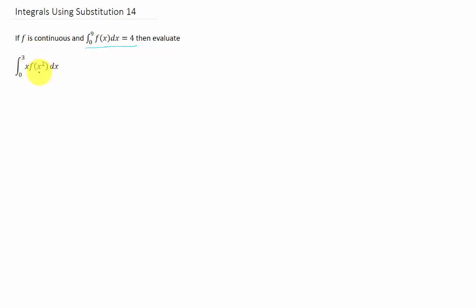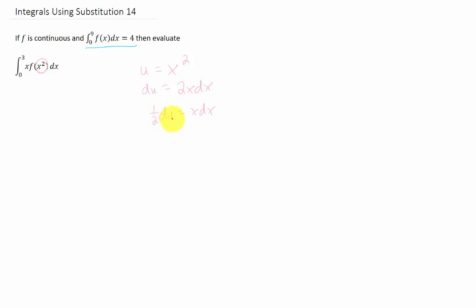There's really no way to find anything out about f of x squared unless we call that x squared some other variable, perhaps u. That would make our du equal to 2x dx, and if we divide both sides by 2, we get that x dx is 1 half du.